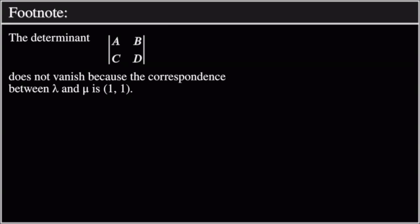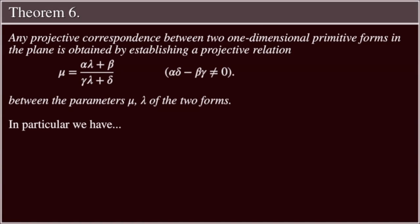Footnote: The determinant |a, b; c, d| does not vanish because the correspondence between λ and μ is one-to-one. Theorem 6: Any projective correspondence between two one-dimensional primitive forms in the plane is obtained by establishing a projective relation μ = (αλ + β) / (γλ + δ), where αδ − βγ ≠ 0, between the parameters μ, λ of the two forms.